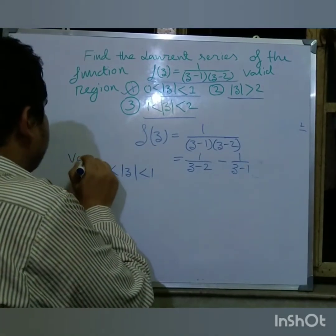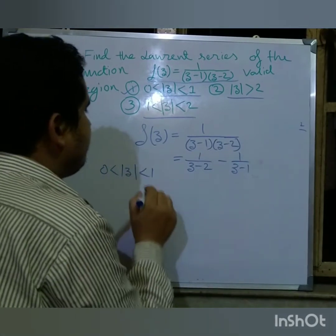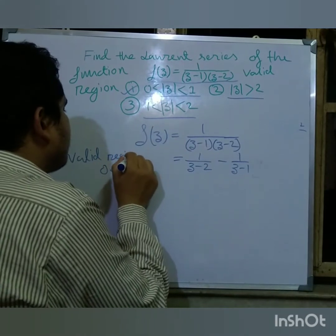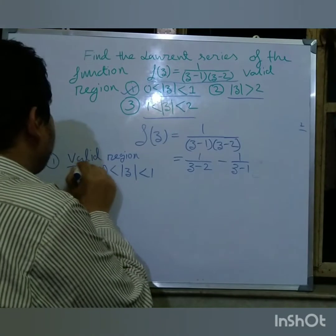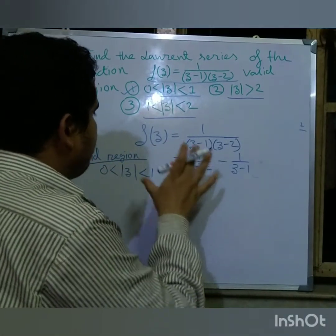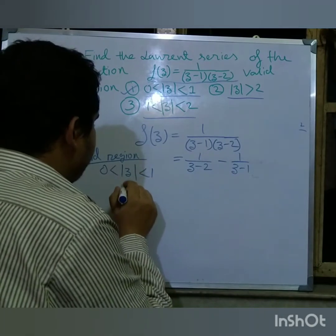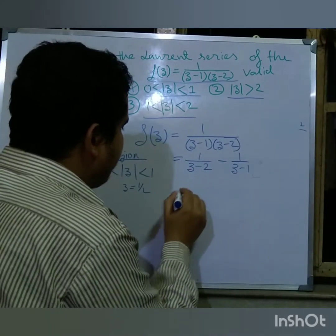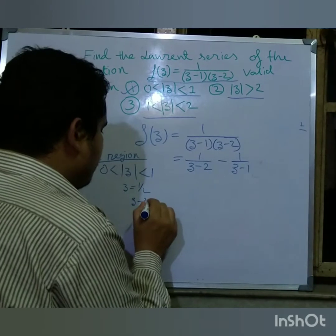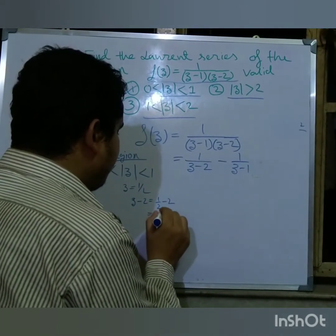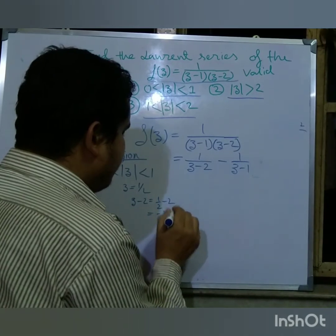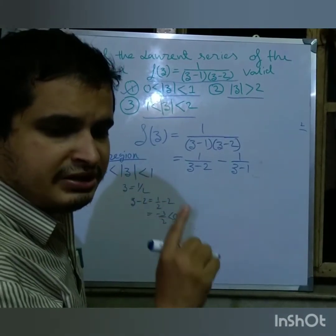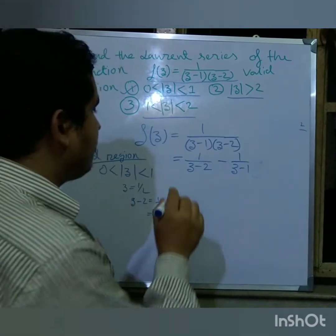This is the valid region for case number 1. Please write everything down so you will understand. I will take z equals one-half as a test value. Substituting into (z minus 2): one-half minus 2 equals minus 3 over 2, so the value is negative.